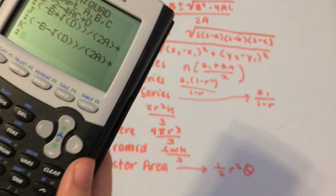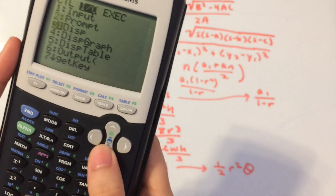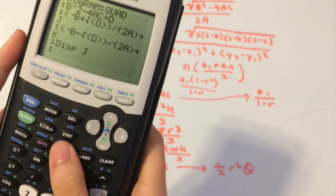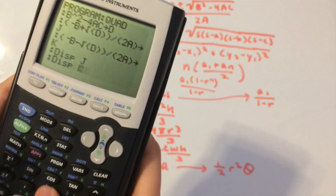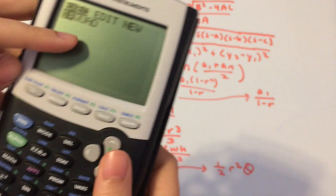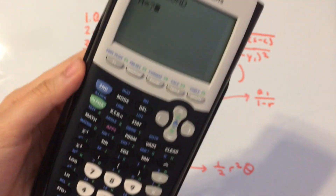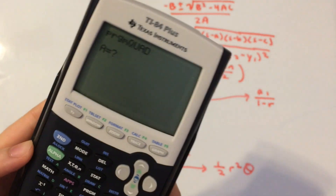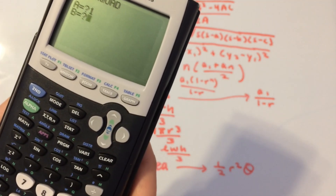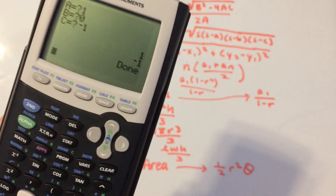Now we have J and K as our two roots; all we have to do is display them. Display J and then display K. Hit Enter and you're done. Second-Quit, then hit Program and you'll see the QUAD program under the Exec menu. Hit Enter twice to run it. Let's try x squared minus 1 — that should give roots 1 and negative 1. Perfect.